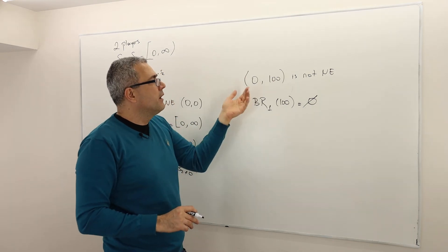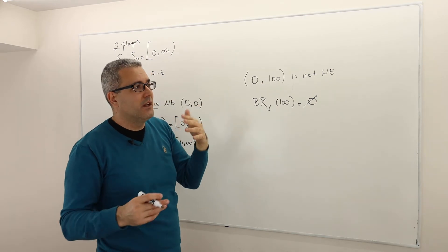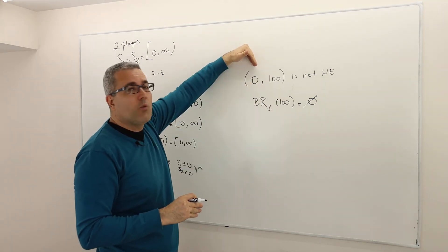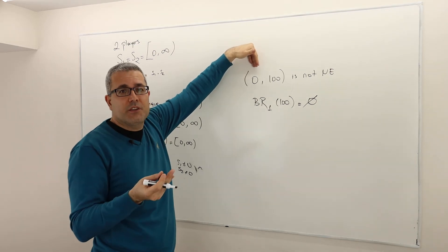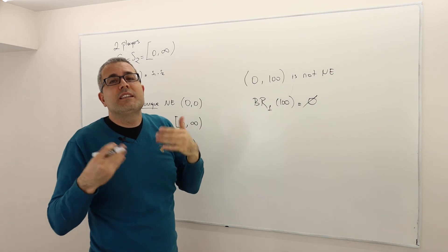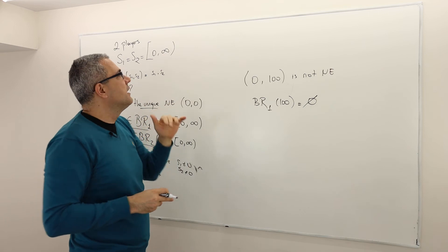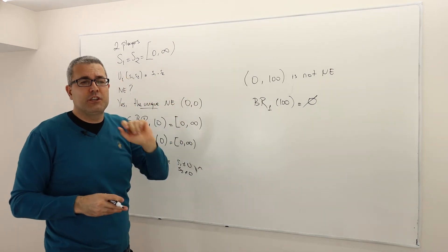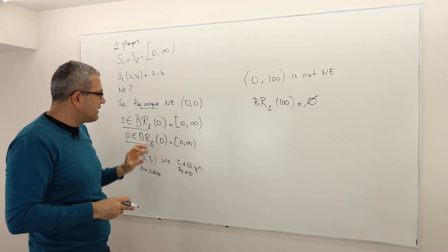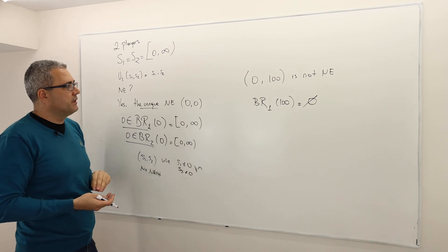That also means zero-hundred is not a Nash equilibrium because player one has a better strategy than zero — but she doesn't have the best strategy. The idea that there's no best is what makes there no Nash equilibrium when somebody's selecting a positive number. But when somebody's selecting zero, then there is a Nash where both are actually playing zero.